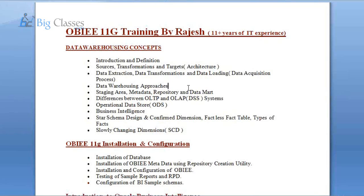As part of the modeling techniques for a data warehouse, we discuss star schema design, the conformed dimension, factless fact tables, and other types of tables used in the data warehouse. We'll also talk about slowly changing dimensions, which are used as part of your ETL.